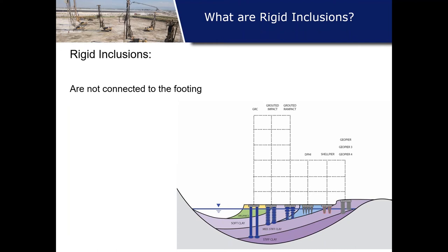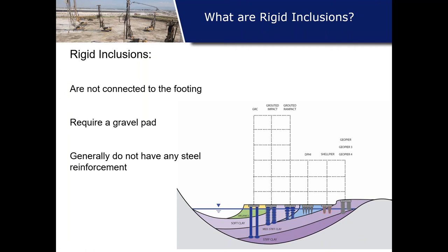Since rigid inclusions are not connected to a footing, they're not a deep foundation. Because there is no connection, they do require a gravel pad to facilitate the load transfer — we'll talk about that shortly. Rigid inclusions may or may not have steel in them, and generally they don't, because steel is expensive and we like to keep prices as low as possible.